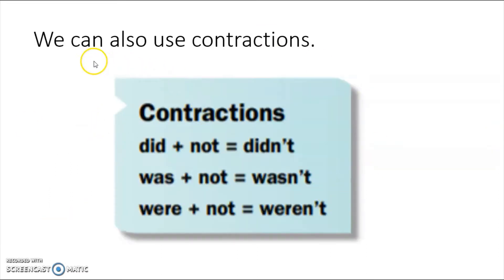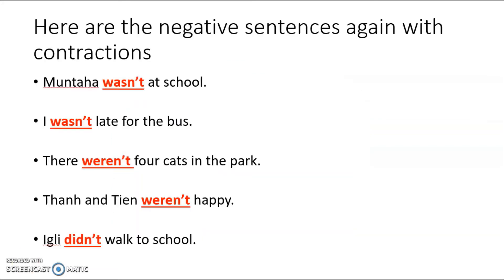Now let's look at contractions. 'Did not' becomes 'didn't.' 'Was not' becomes 'wasn't.' 'Were not' becomes 'weren't.' Here are the negative sentences again with contractions: Munta wasn't at school. I wasn't late for the bus. There weren't four cats in the park. Tan and Tin weren't happy. Ugly didn't walk to school.